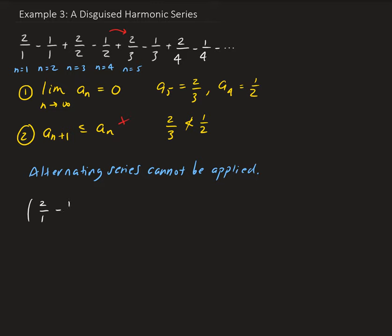The first two, and then the second group. So we have two over one minus one half plus two over two minus one half plus two over three minus one third plus two over four minus one fourth, and so on.